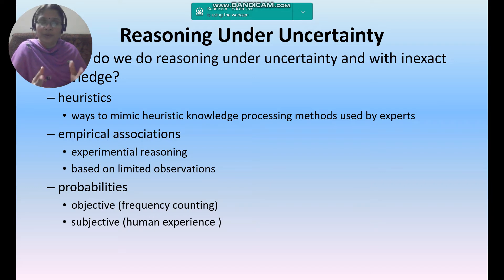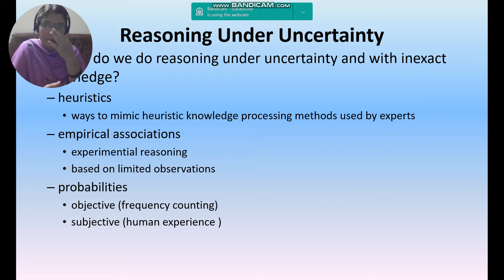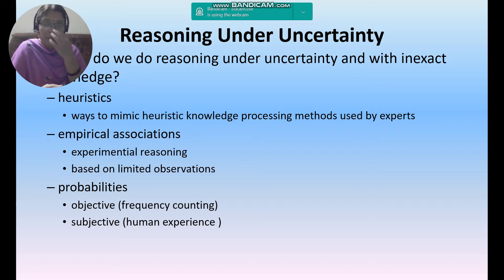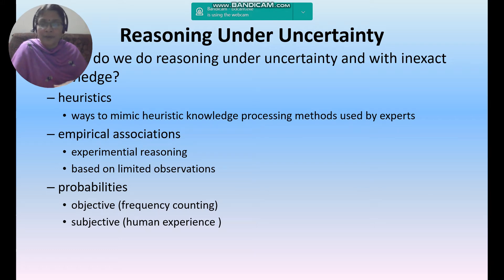How do we do the reasoning under uncertainty with inexact knowledge? There are three things we are going to see: number one, heuristics; number two, empirical associations; number three, probabilities. What is the meaning of heuristics? The ways to mimic heuristic knowledge — processing methods used by experts.